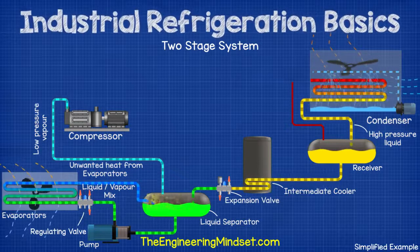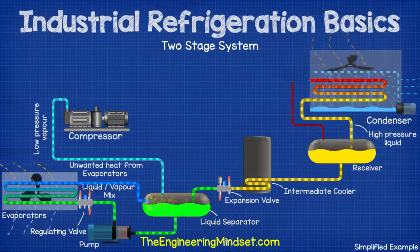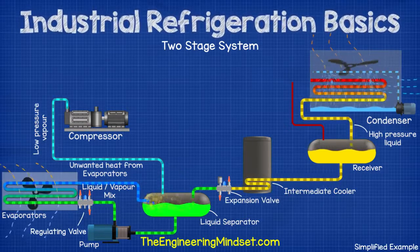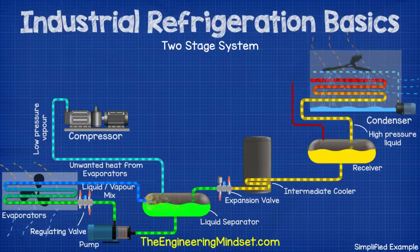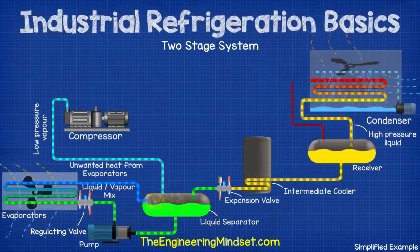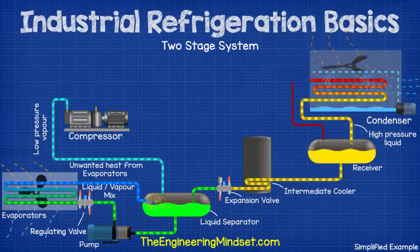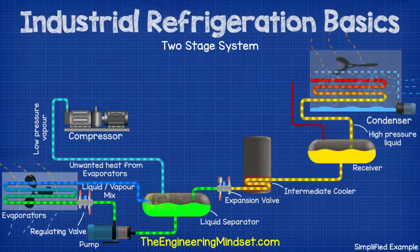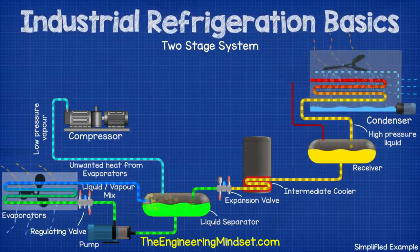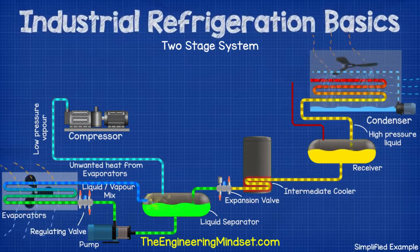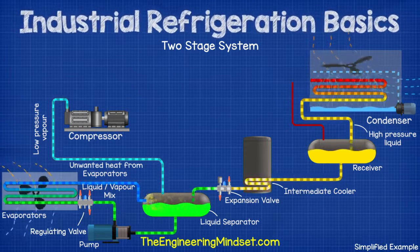We again have the refrigerant flowing the same cycle, but we have a few other components and cycles. In this type, we have a tank called the intermediate cooler, which sits between the receiver and the expansion valve. The main flow of refrigerant passes through the coil inside the tank, and then into the main expansion valve, just like the single stage system.